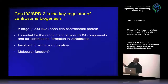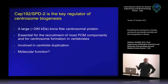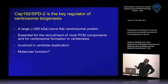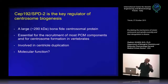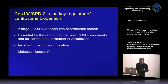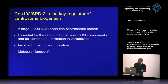Cp192 and its ortholog SPD-2 in flies and worms is the master regulator of centrosome biogenesis. It is a large protein — we showed it is 100 kDa larger than previously reported due to an N-terminal extension. It is essential for the recruitment of most PCM components and for centrosome formation in vertebrates. It is also involved in centrosome duplication, and its molecular function has been unknown.